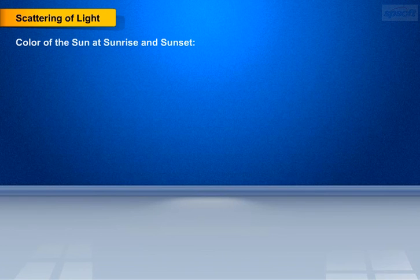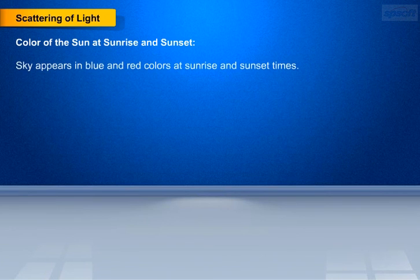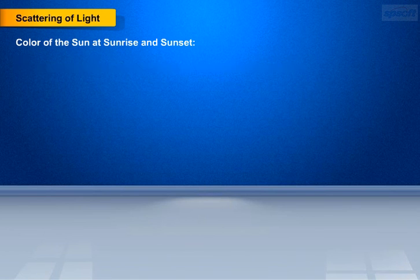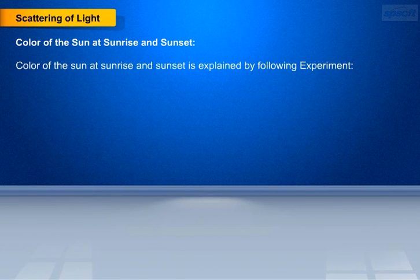Now let's study about the color of the sun at sunrise and sunset. Sky appears in blue and red colors at sunrise and sunset times. To understand this concept, let us do an experiment.